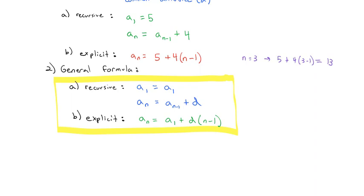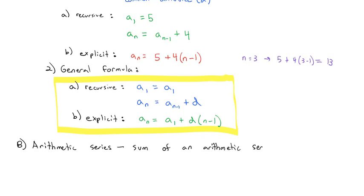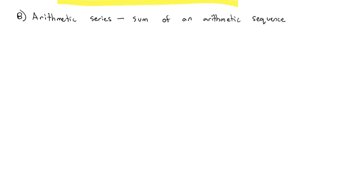We're not actually interested in arithmetic sequences — what we're interested in is an arithmetic series. As you might expect, since a series is a sum of the sequence, an arithmetic series is the sum of an arithmetic sequence. We want to add up all the numbers of an arithmetic sequence, and we're going to look for a pattern to help us do it quicker.